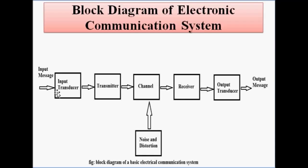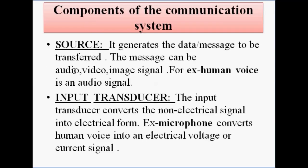This is the block diagram of a basic electronic communication system. As you see here, this is the input message and there are various blocks which are involved in the communication process: the input transducer, transmitter, channel, noise and distortion signals, the receiver, the output transducer, and the output message. We are going to discuss each of these blocks one by one in detail, covering all the components or blocks involved in the communication system.